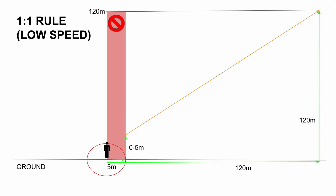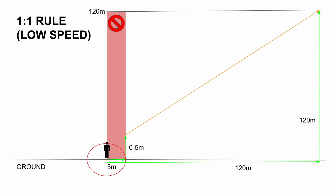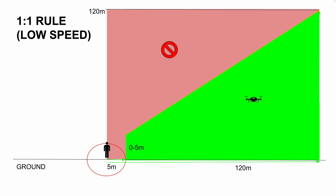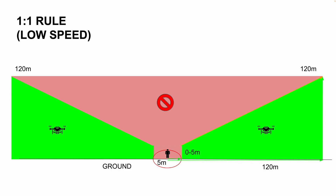So what happens when we enable the low speed mode, which decreases the safety distance from 30 to 5 meters? This is in principle the same, just that the safety radius around the person has been shrunk from 30 to 5 meters. And because we are applying the 1-1 rule, the height is equally reduced to 5 meters. The green area indicates where the drone is allowed to fly when operated in low speed mode. Of course, both the 5 and 30 meter minimum safety radius applies 360 degrees around the uninvolved person.